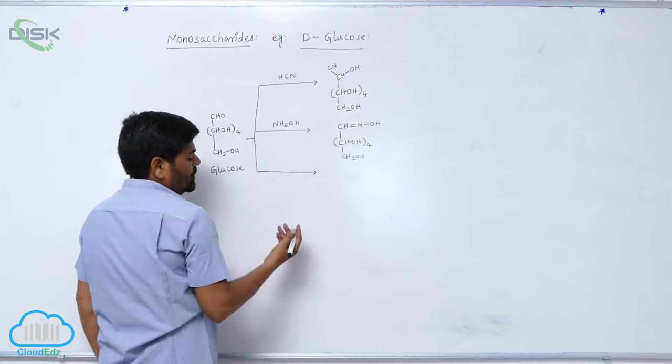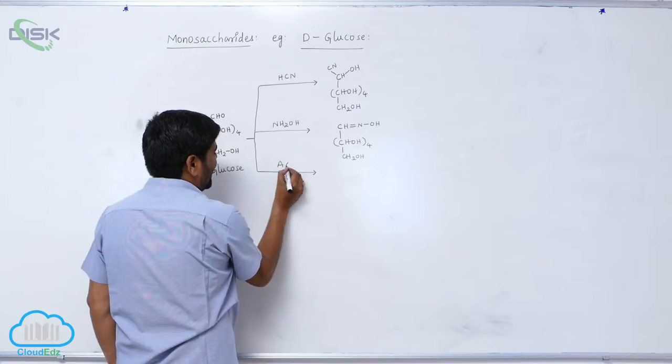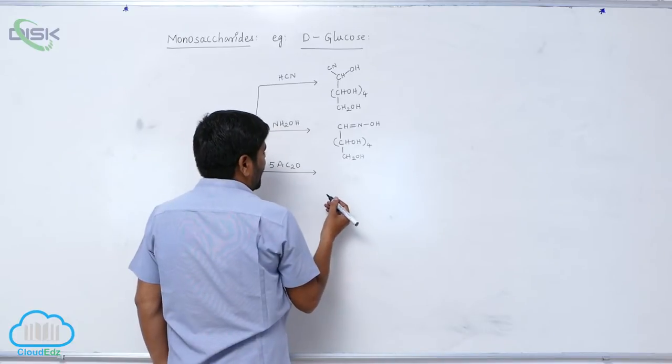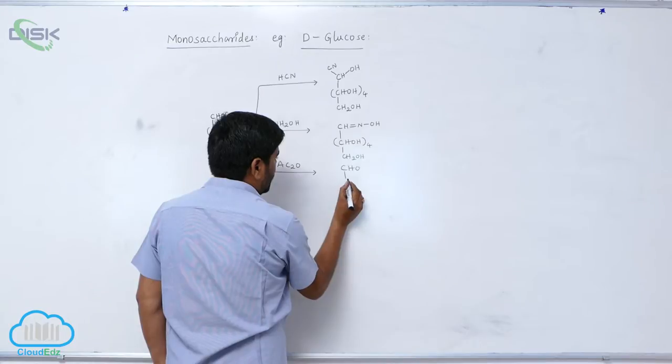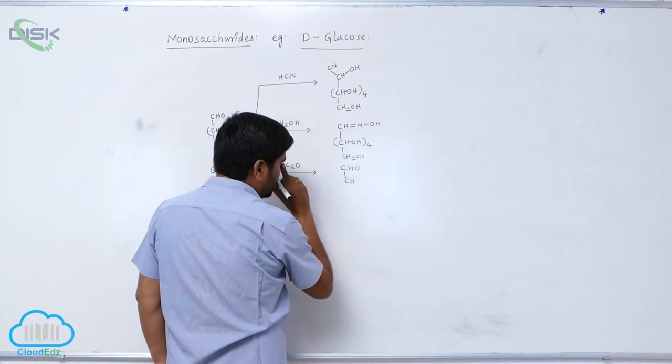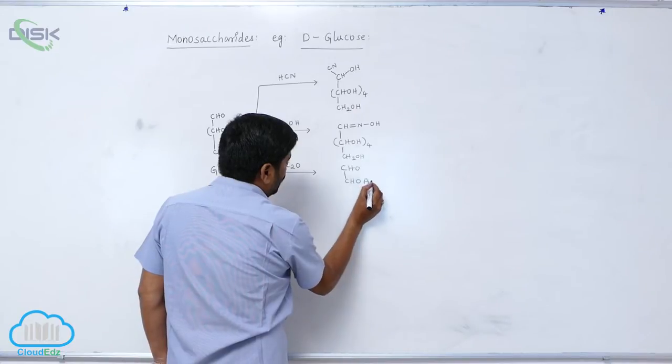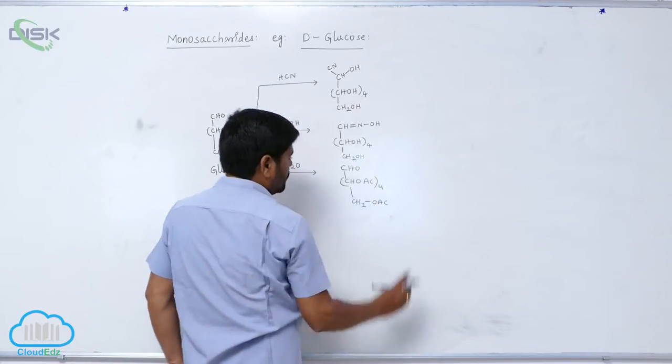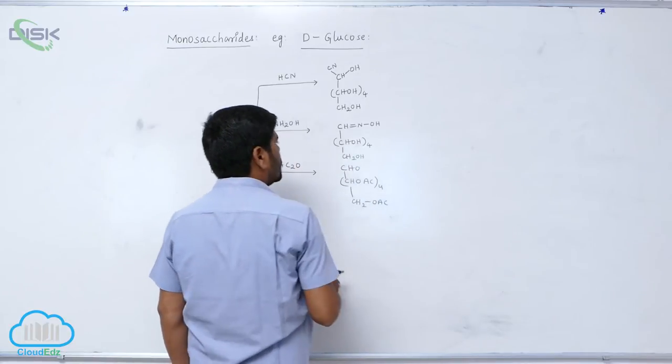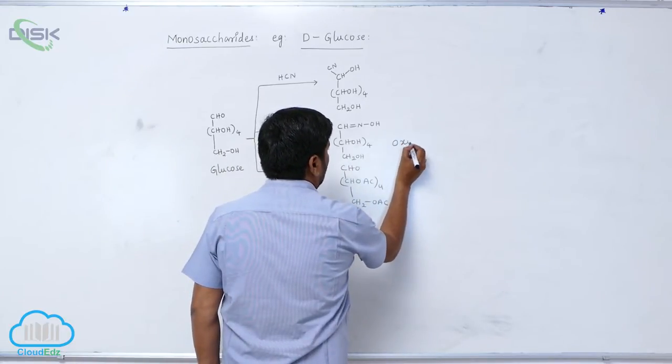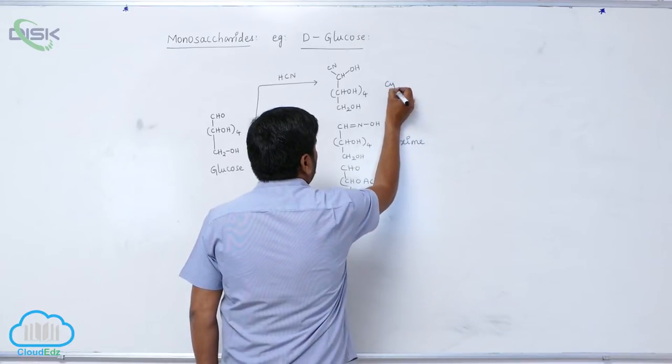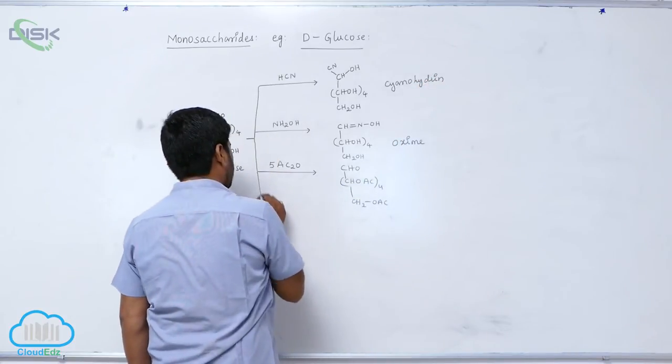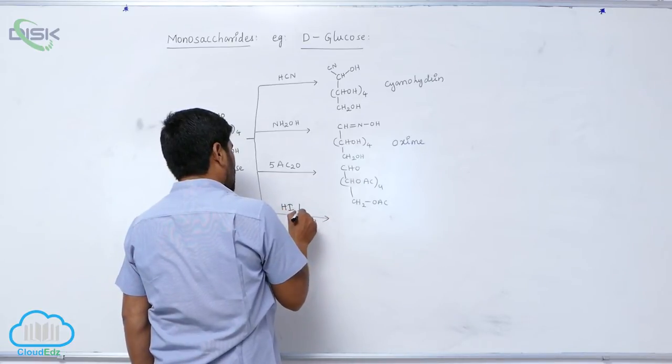Now it reacts with acetic anhydride, 5 moles of acetic anhydride, to form a pentaacetate derivative: aldehyde CHOAC arrays four times then CH2OH. It is a pentaacetate derivative, this is oxygen. This is which one? Cyanohydrin. Cyanohydrin hydrogen iodide in